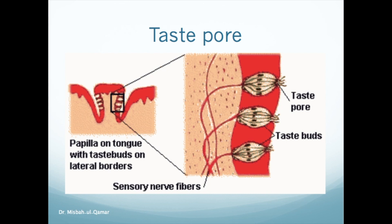The taste pore is formed by the apical surfaces of taste cells. Taste hairs protrude from this pore, and that's how a surface for taste molecules is provided by a taste hair or a microvillus.